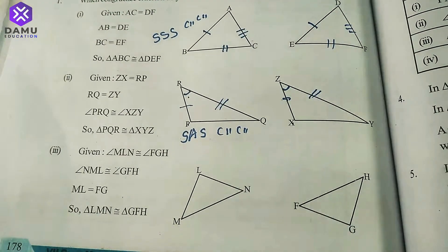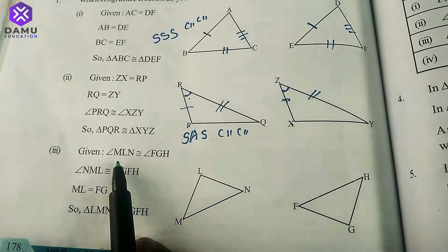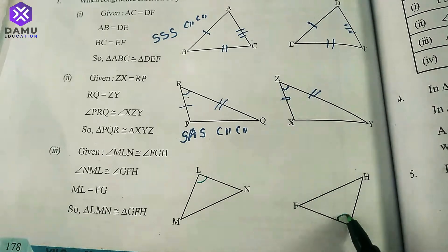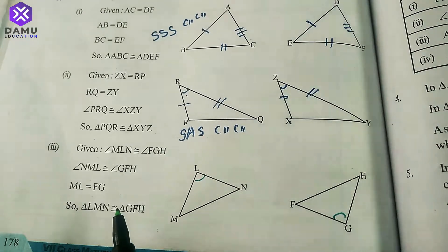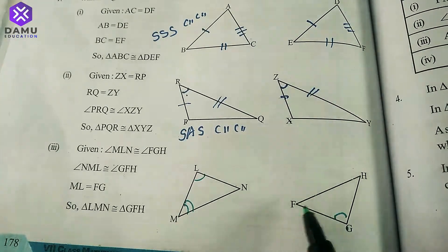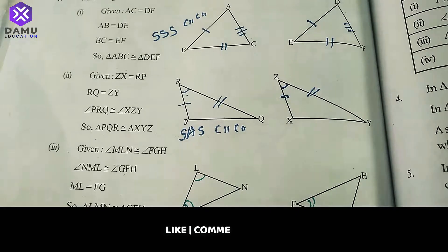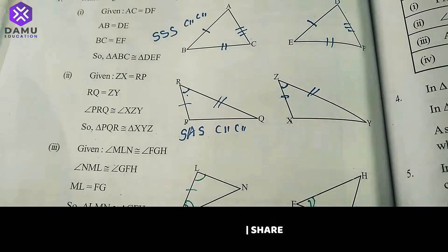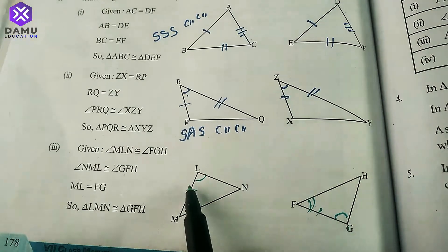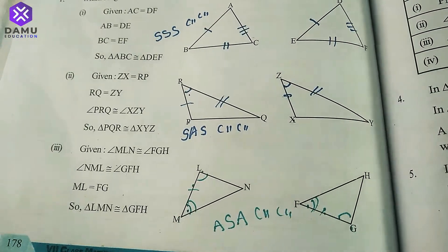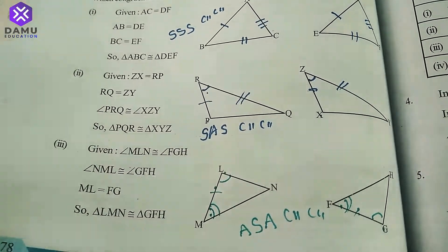Next, angle LMN is congruent to angle FGH. The two angles M and F, and L and G are congruent to each other. Then LM and FG are equal. So first angle, then side, then angle — by the ASA congruency criterion, the two triangles are congruent to each other.